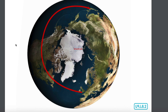Cabot thought Columbus had made a strategic mistake in his attempts to sail to the East Indies. Columbus had sailed in the middle latitudes, close to the equator, where the distances would be longest. Cabot thought he could get to the East Indies faster by sailing at a more northerly latitude, where the distances would be shorter. He proposed heading north, hoping to find a northwest passage to Asia and the East Indies.